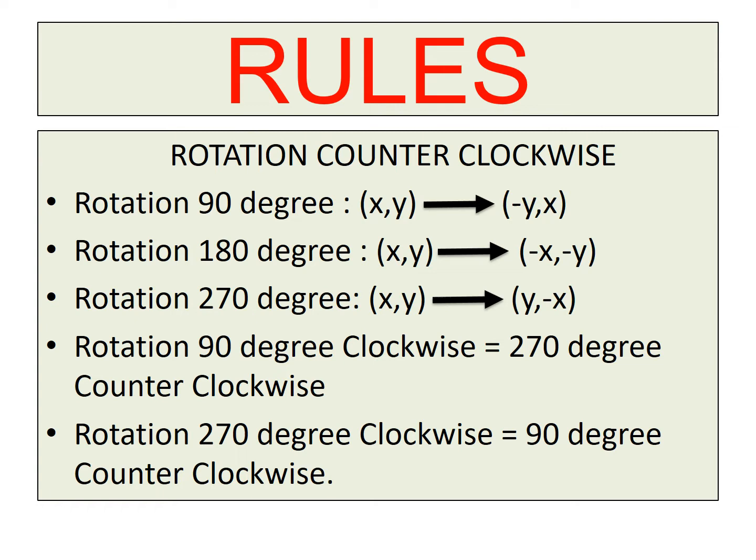For a 270° clockwise rotation, you flip the coordinates and change the sign of the Y coordinate. Note that rotating 90° clockwise is the same as rotating 270° counter-clockwise, and rotating 270° clockwise is the same as rotating 90° counter-clockwise.